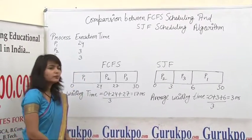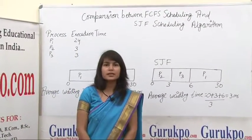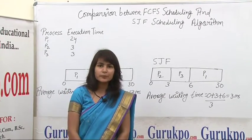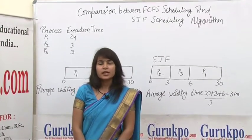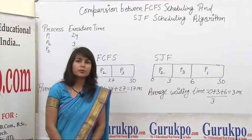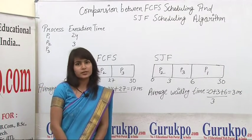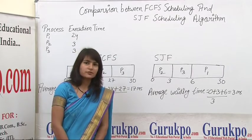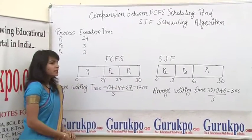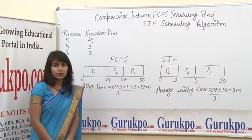FCFS scheduling policy is the simplest algorithm policy for CPU scheduling. In FCFS policy, the CPU is provided to the process which comes in the ready queue first and requests for the CPU first. In FCFS policy, the average waiting time is quite long.